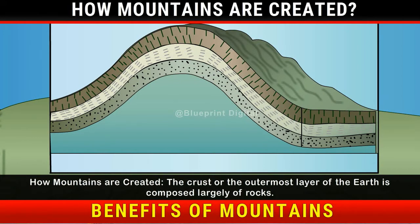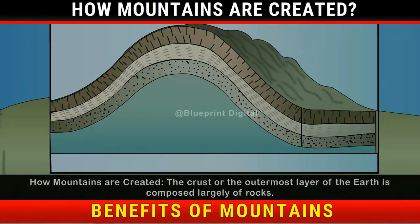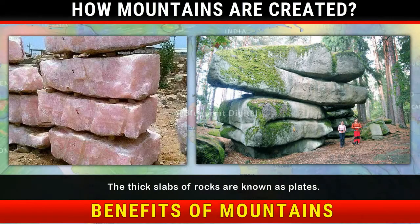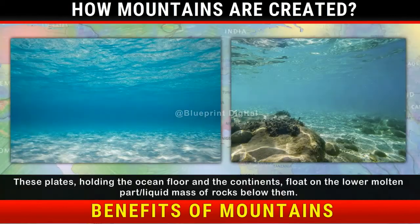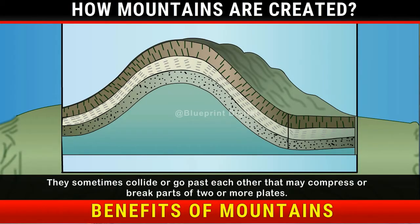How mountains are created: The crust, or the outermost layer of the earth, is composed largely of rocks. The thick slabs of rocks are known as plates. These plates, holding the ocean floor and the continents, float on the lower molten liquid mass of rocks below them. They sometimes collide or go past each other, which may compress or break parts of two or more plates.